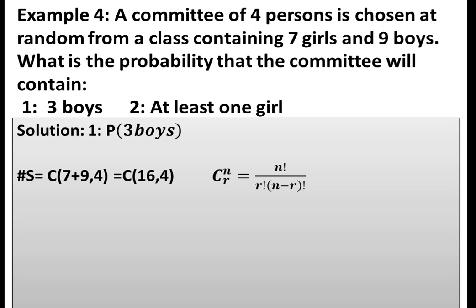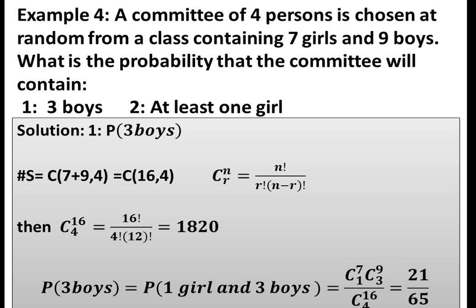The combination formula is n factorial over r factorial times n minus r factorial. We calculate C_4^16 which equals 16 factorial over 4 factorial times 12 factorial, giving us 1820.